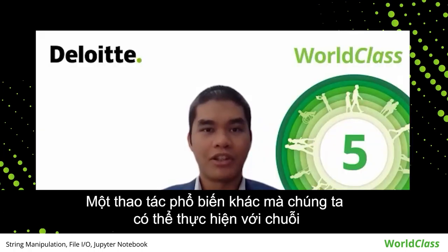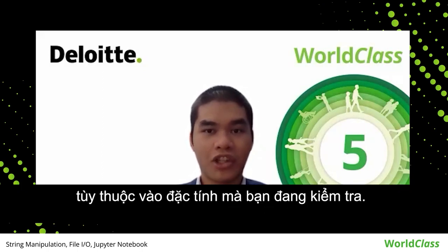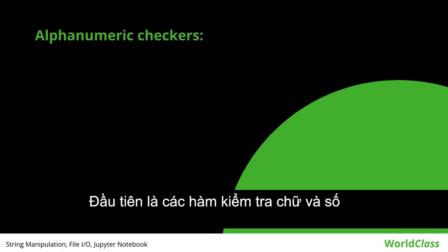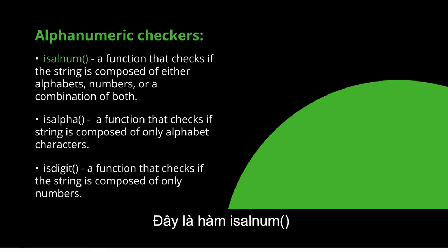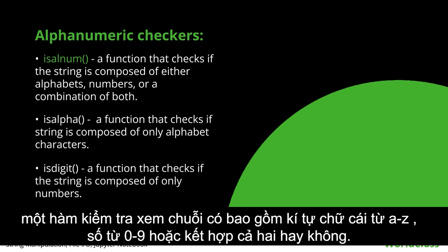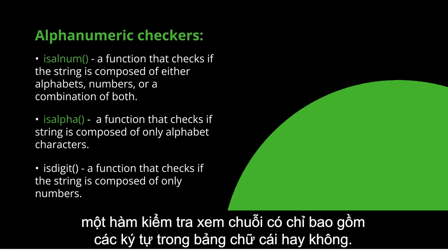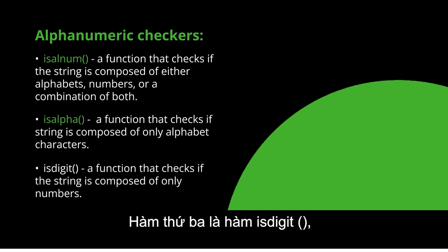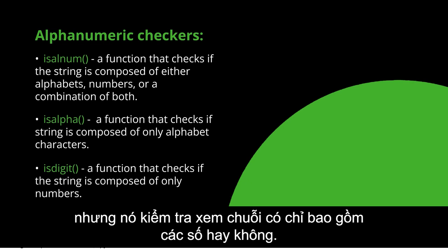Another common thing we can do with strings is check its characteristics. These built-in functions all return a boolean value of true or false depending on the characteristic you're checking for. First on the list are the alphanumeric checkers: ISALNUM, ISALPHA, and ISDIGIT. The ISALNUM function checks if the string is composed of either alphabets from A to Z, numbers from 0 to 9, or a combination of both. The ISALPHA function checks if the string is composed of only alphabet characters. ISDIGIT is just like ISALPHA, but instead of alphabets, it checks if the string is composed of only numbers.